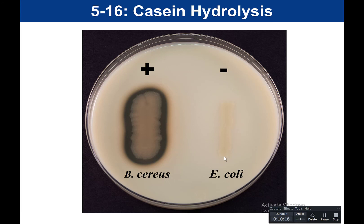In this test there is no pH indicator and no reagent. It's simply a readout of substrate and products: the substrate is intact casein making the milk cloudy, and the products — polypeptides and amino acids — result in the agar becoming clear. Positive: clear zone around growth. Negative: cloudy milk remains. That is the casein hydrolysis test.